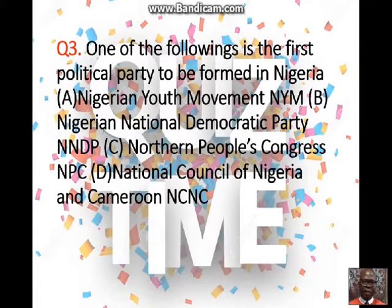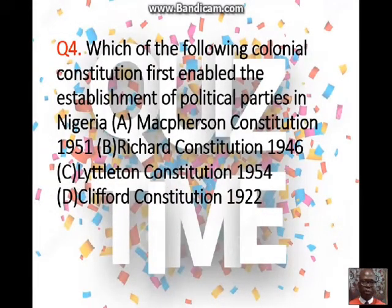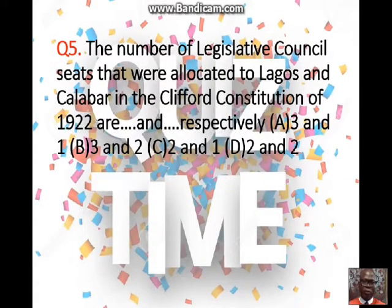Question three: one of the following is the first political party to be formed in Nigeria. A. Nigerian Youth Movement (NYM); B. Nigeria National Democratic Party (NNDP); C. Northern People's Congress (NPC); D. National Council of Nigeria and Cameroon (NCNC). Question four: which of these colonial constitutions first enabled the establishment of political parties in Nigeria? A. Macpherson Constitution of 1951; B. Richards Constitution of 1946; C. Lyttleton Constitution of 1954; D. Clifford Constitution of 1922. Question five: the number of legislative council seats allocated to Lagos and Calabar in the Clifford Constitution of 1922 are dash and dash respectively. A. Three and one; B. Three and two; C. Two and one; D. Two and two.